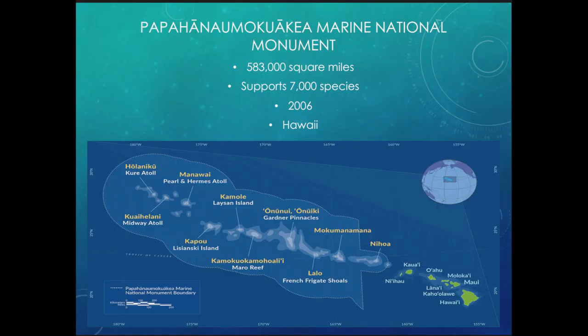The next one is Papahanaumokuakea — very hard to pronounce. Most of you got it: it's in Hawaii. It's a Marine National Monument, 583 square miles, supporting 7,000 different species. It was created in 2006 and is found near Hawaii.